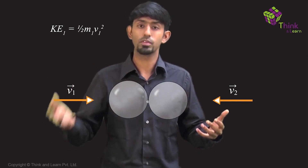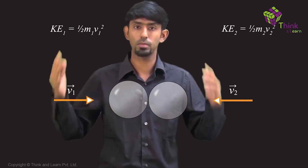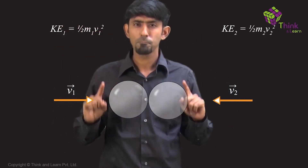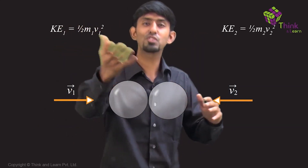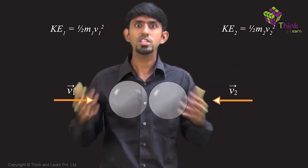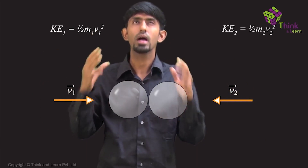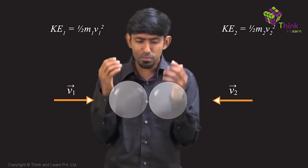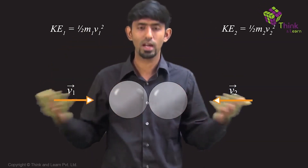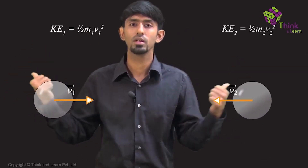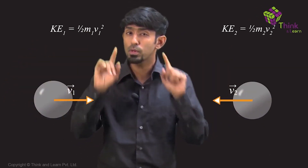Let's imagine they came with some velocity V1 and V2. They had some kinetic energies: half M V1 squared and half M V2 squared. The question is: what's happening to the energy? There must have been a point while they were colliding when their kinetic energy was zero because both of them must have stopped before going to the other side. So there was a point when both of them were at rest — what happened to that kinetic energy when they were colliding?